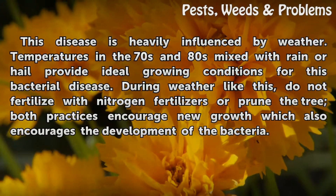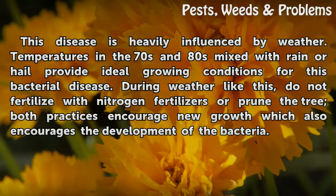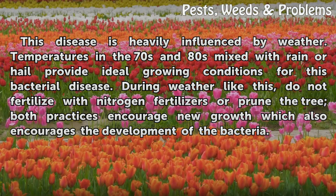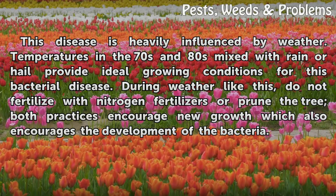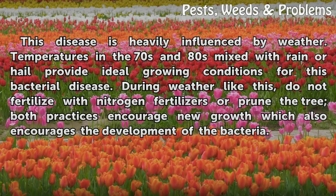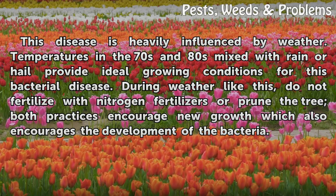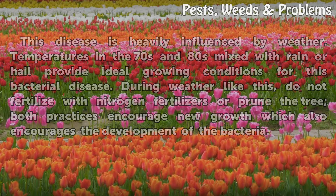This disease is heavily influenced by weather. Temperatures in the 70s and 80s mixed with rain or hail provide ideal growing conditions for this bacterial disease. During weather like this, do not fertilize with nitrogen fertilizers or prune the tree. Both practices encourage new growth which also encourages the development of the bacteria.